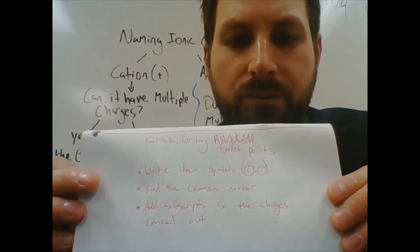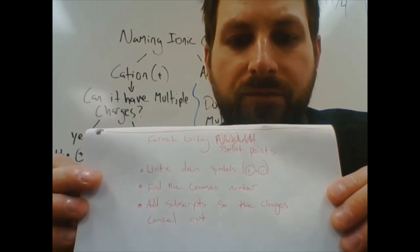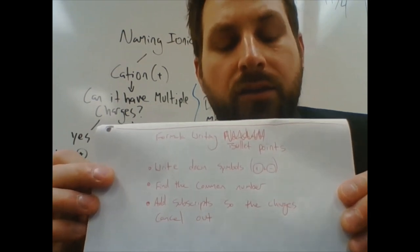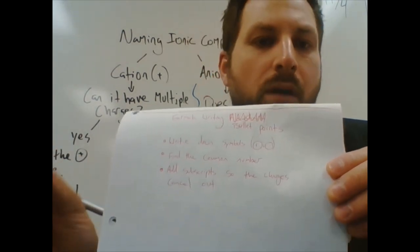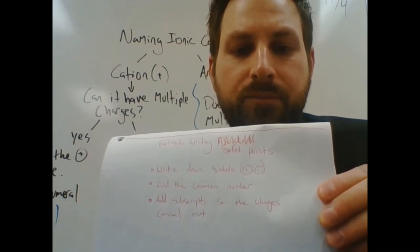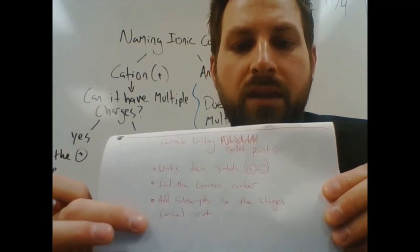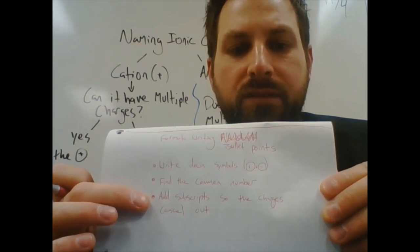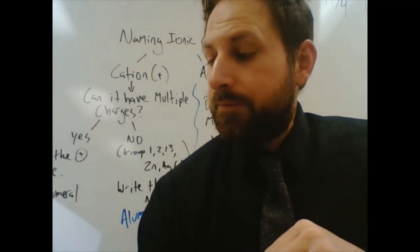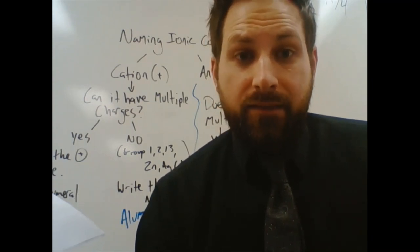Step two. You find the common number. Usually, you can find the common number by multiplying the positive and the negative number together. Step three. You're going to add subscripts until the charges cancel out. And that's it.